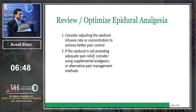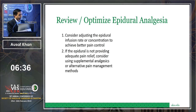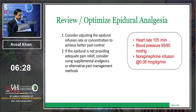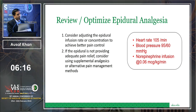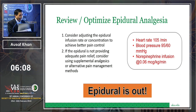Since we have an epidural catheter, we first optimize epidural analgesia — consider adjusting the infusion rate or concentration. However, in our patient with blood pressure 95/60, heart rate 105, and on norepinephrine, increasing the epidural would result in further vasodilation and deterioration. So the epidural option is out. We need to use a multimodal approach, utilizing different pain management modalities.